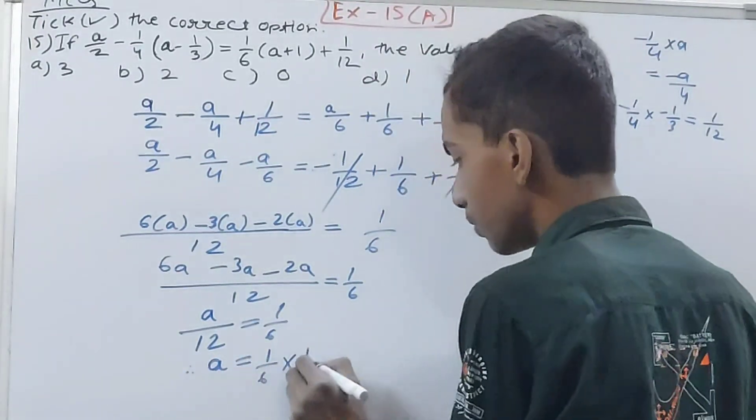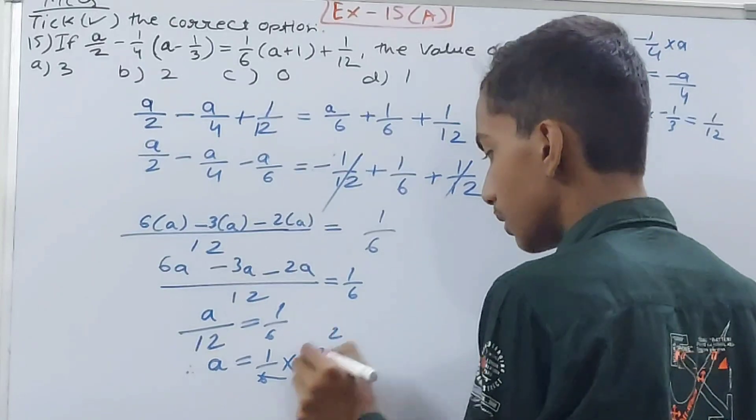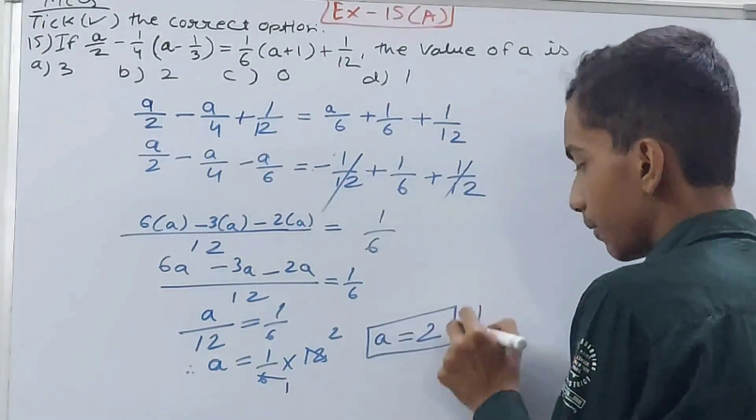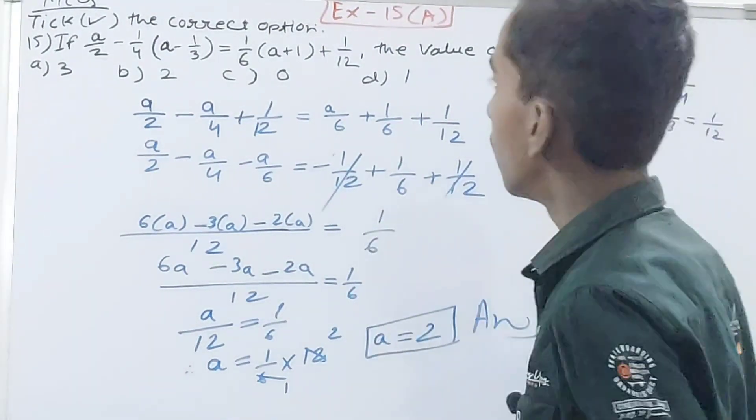Therefore a equals 1/6 times 12, so your a is equal to 2. And this is your final answer, option B is correct.